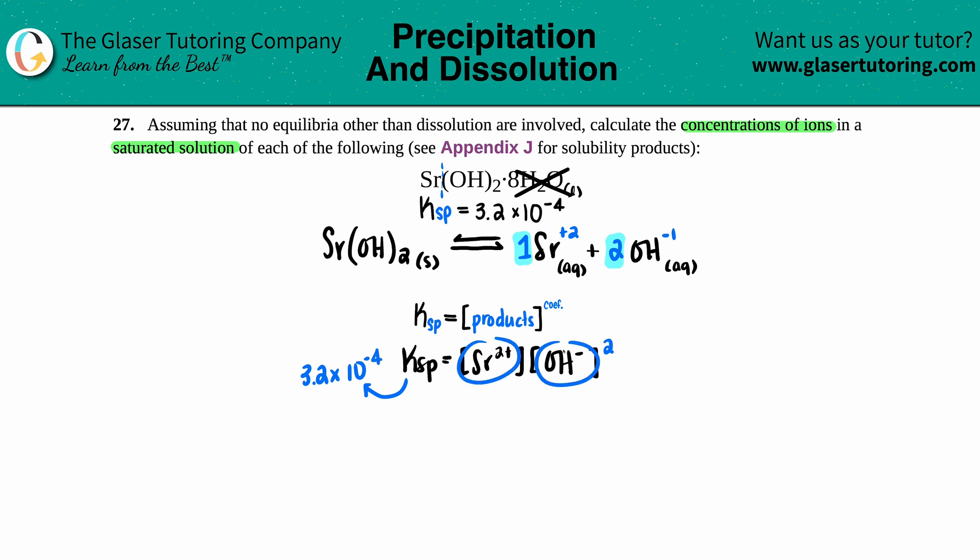So Ksp, what we looked in the back of the textbook, 3.2 times 10 to the negative fourth. But the thing is, I don't know these ions, so I'm just going to make up variables. I dare you to use any other variable except for x. You can't. So I'm going to use x.